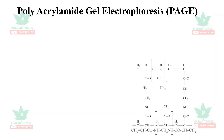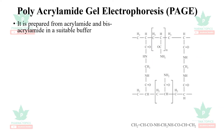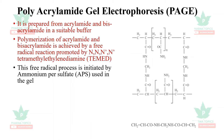Polyacrylamide gel electrophoresis uses a polymer of acrylamide in a suitable buffer. The polymerization of acrylamide and bis-acrylamide is achieved by a free radical reaction promoted by TEMED (N,N,N′,N′-tetramethylethylenediamine), and this free radical process is initiated by ammonium persulfate used in the gel.